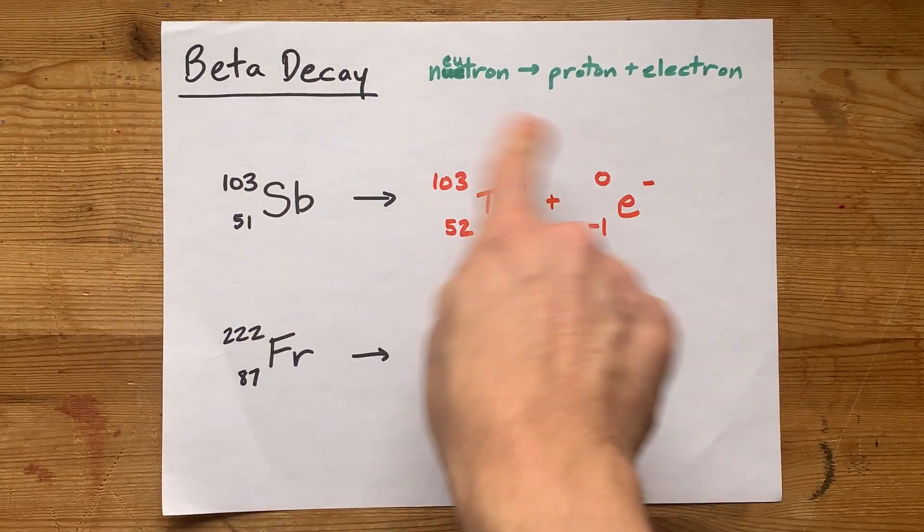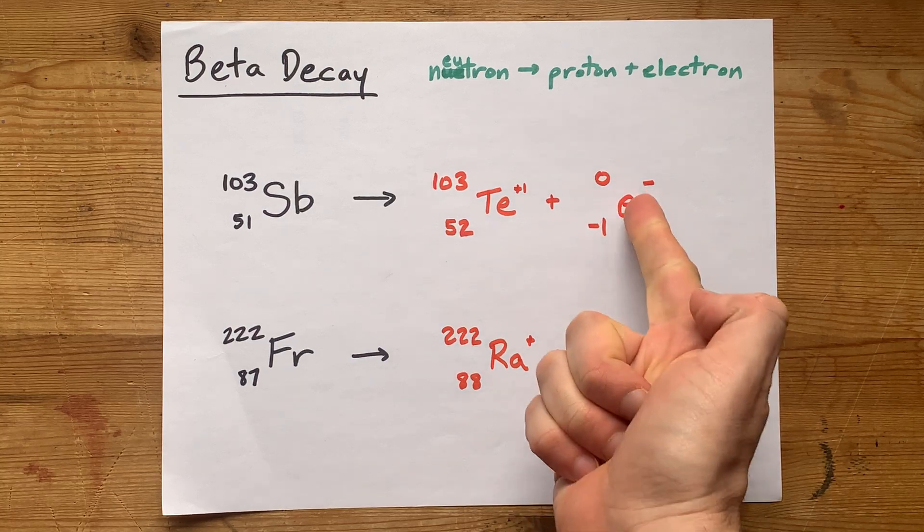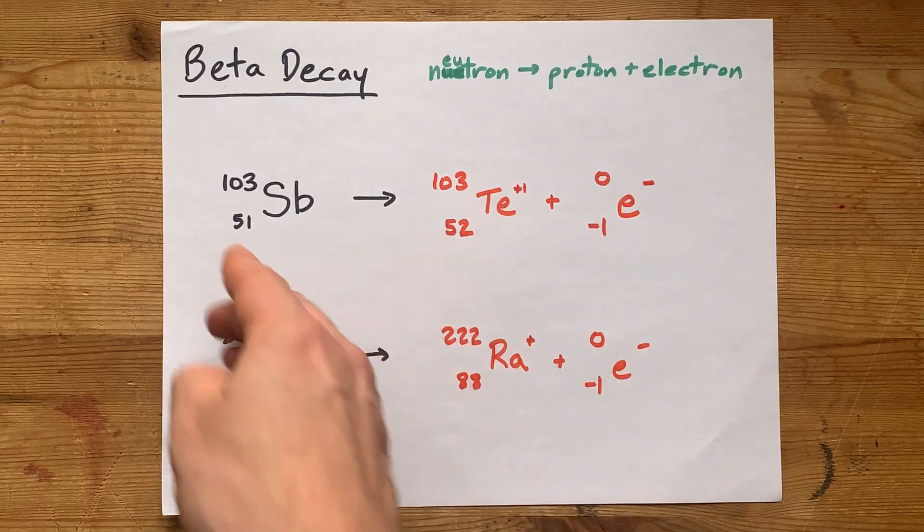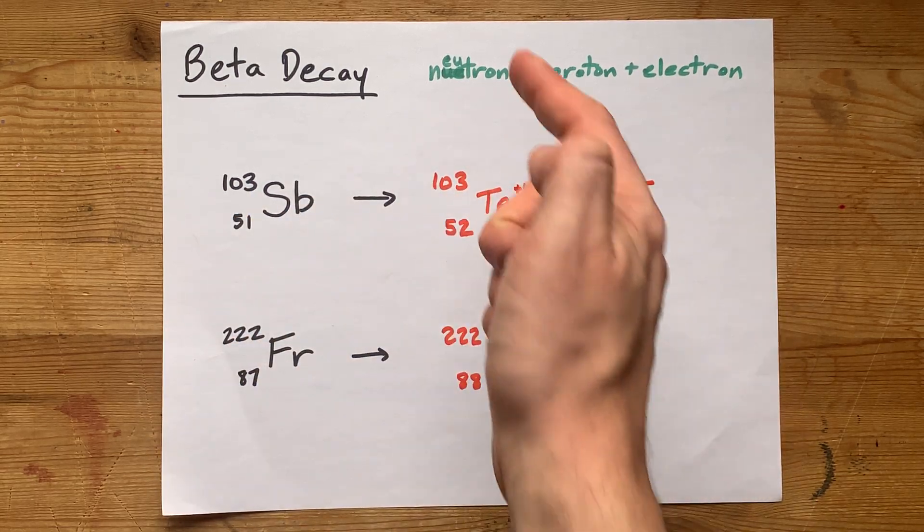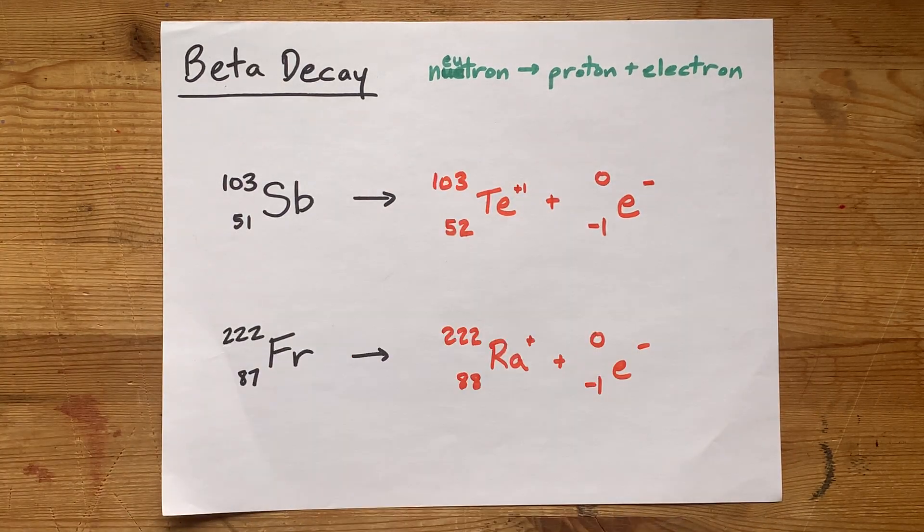Beta decay is when a neutron breaks apart to give you a proton and electron. This is the symbol for the beta particle, or electron. And then whatever is left behind goes here. Your atomic number will change because you're gaining a proton. Absolutely beautiful, just like you are.